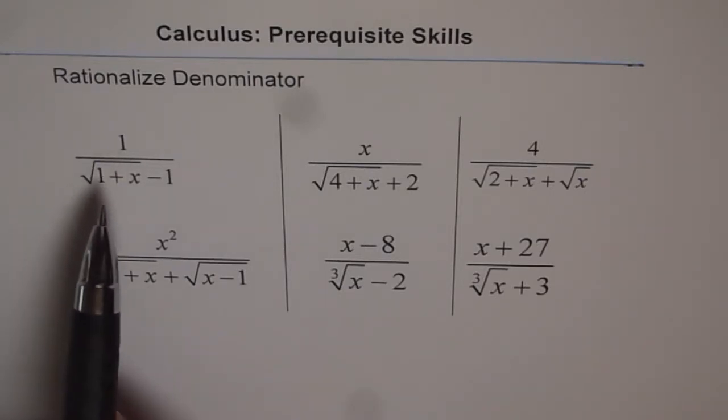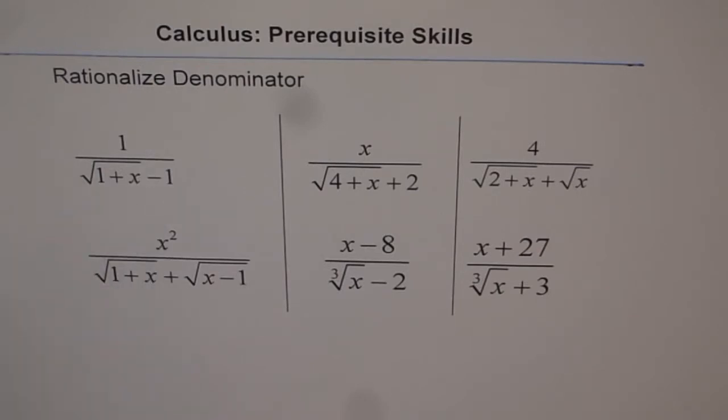Here square root of 1 plus x minus 1 is in the denominator. So when we are rationalizing, we are trying to get rid of square root. That is the base. So all these six questions have square root terms in the denominator. And therefore, the question is rationalize denominator.